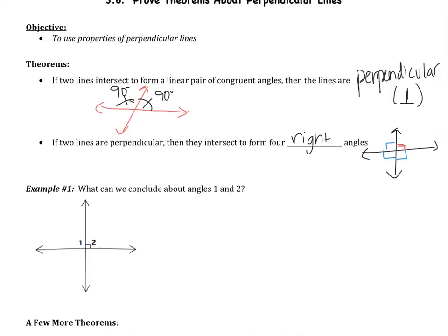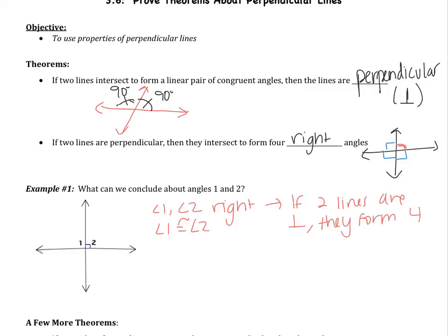Going down to example one: what can we conclude about angles one and two? We know our lines are perpendicular, so all four angles are right. So we know that angle one and angle two are both right, and if they are both right, then they are congruent. We're going to write a reason for this: if two lines are perpendicular, they form four right angles — that's the theorem we just wrote down.